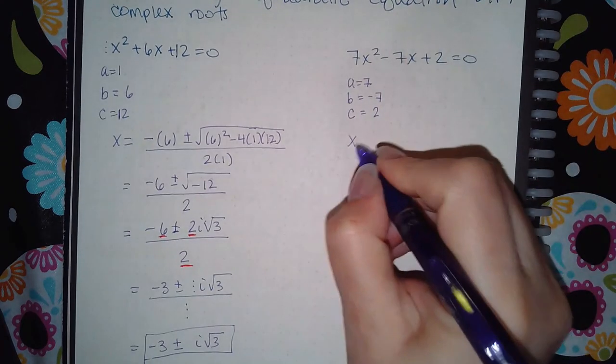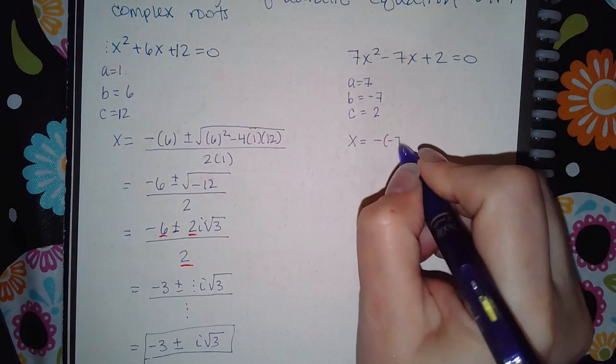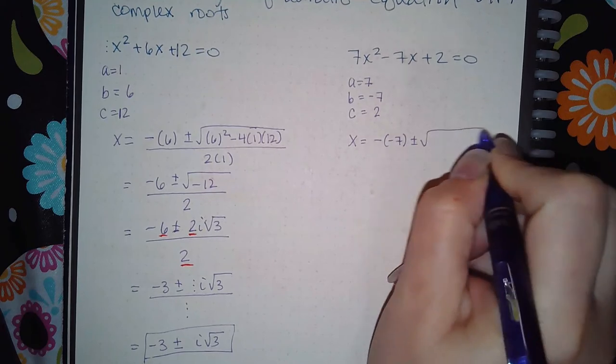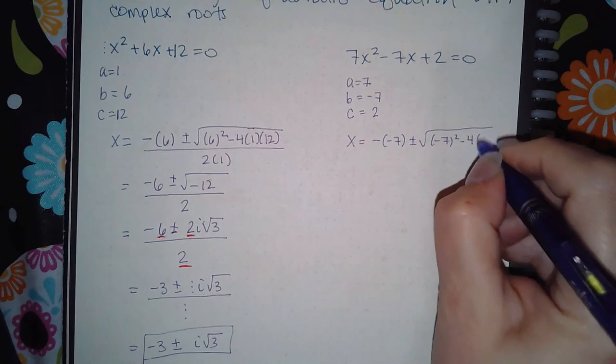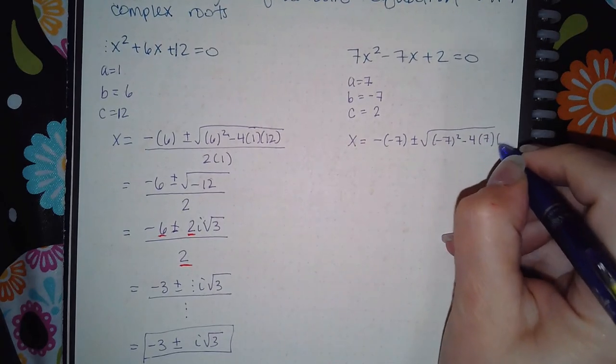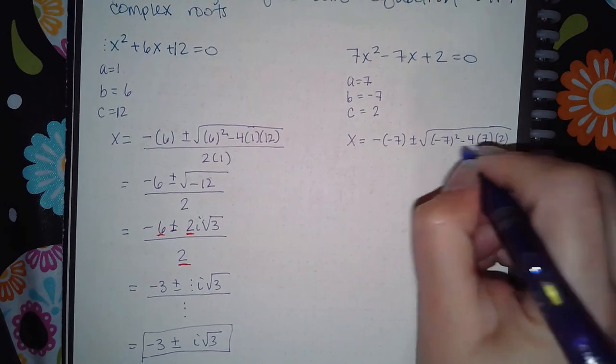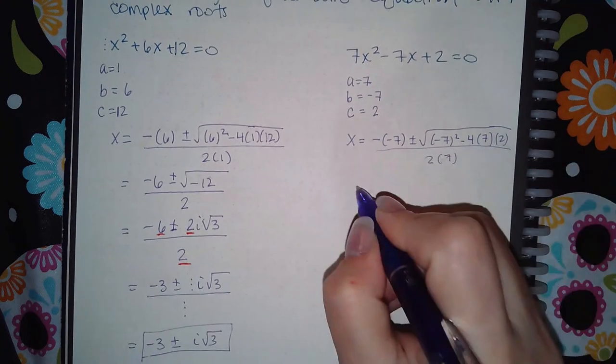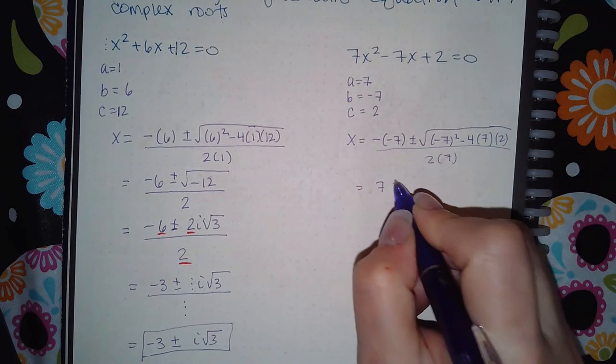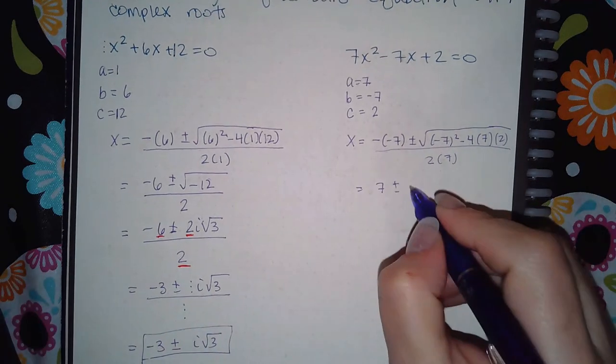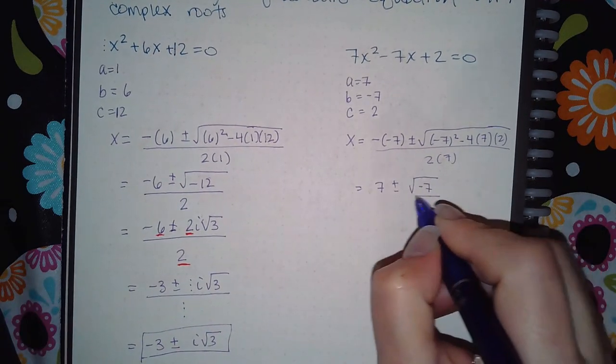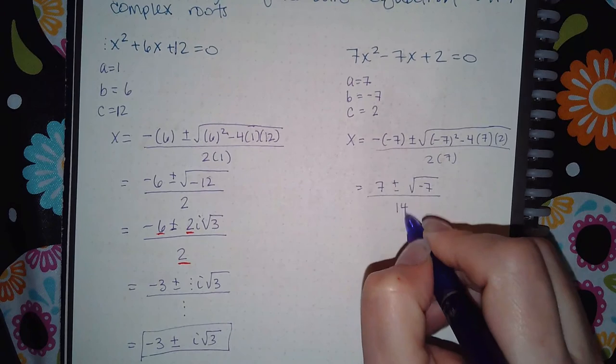So we use the formula we get negative b plus or minus b squared minus 4ac all over 2a. So we get a positive 7 there. And let's see, inside the radical I get a negative 7, and then downstairs I get a 14.